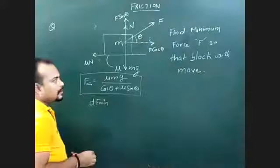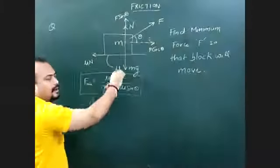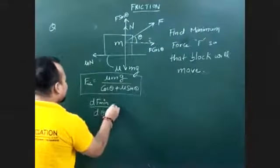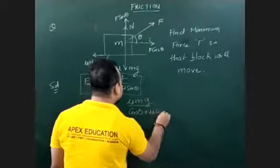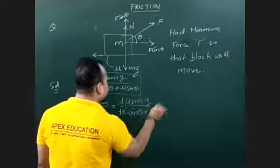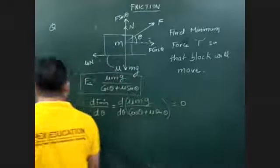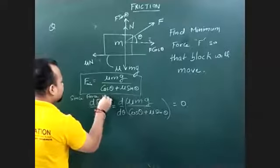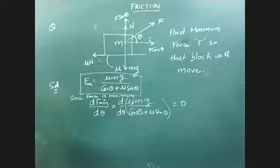We differentiate F with respect to theta and set it equal to zero. So d/dθ of [mu mg divided by (cosθ plus mu sinθ)] equals zero. Since F is minimum, its derivative with respect to θ equals zero.